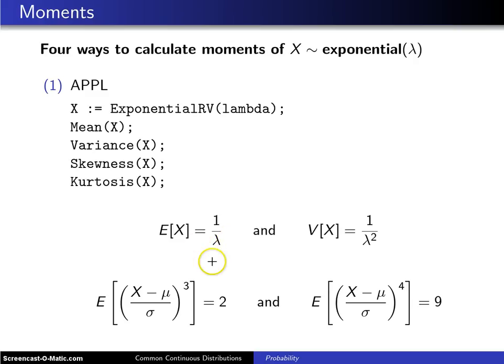you will get one over lambda for the population mean, one over lambda squared for the population variance, two for the skewness, and nine for the kurtosis.